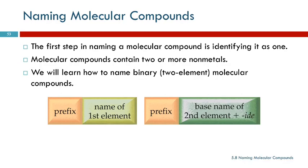Generally, we look at the first element. If it's a metal, it's an ionic compound. If it's not a metal, chances are good it's a molecular compound.